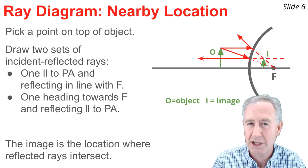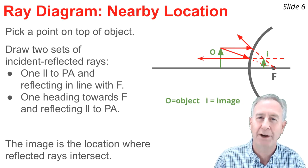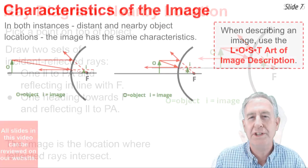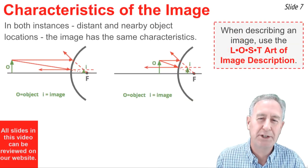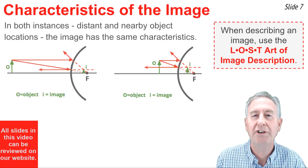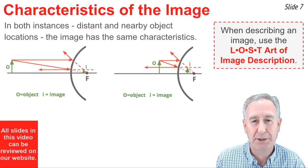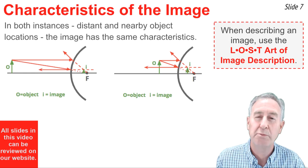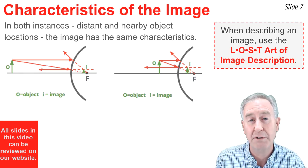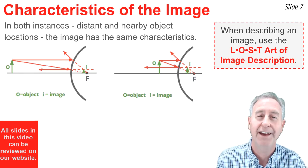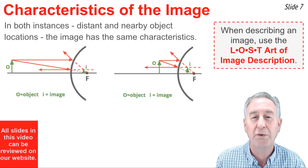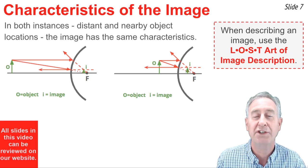Just like the first instance, my image is behind the mirror and upright. When describing the characteristics of images produced by mirrors, it's important to follow the LOST art of image description. LOST is a mnemonic to help me remember what characteristics I should be describing. L is for location, O for orientation, S for size, and T for type.